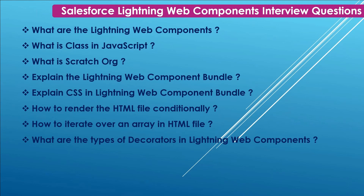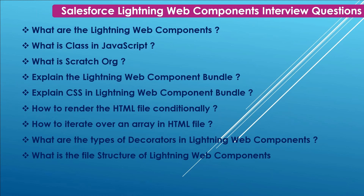Next: What are the types of decorators in LWC? We have three decorators: @api, @track, and @wire. Next: What is the file structure of Lightning Web Components? Inside the LWC folder we have an HTML file, JavaScript file, JS-meta.xml file, CSS file, and SVG file.